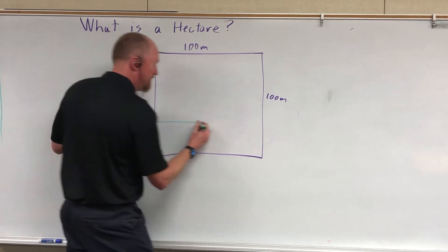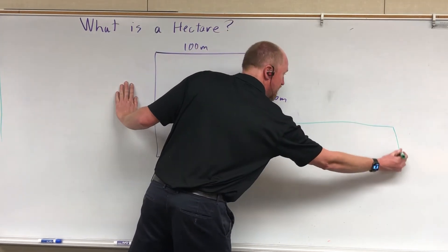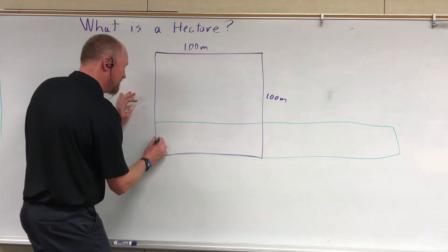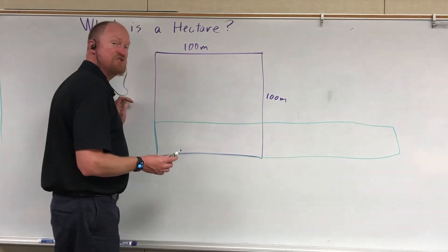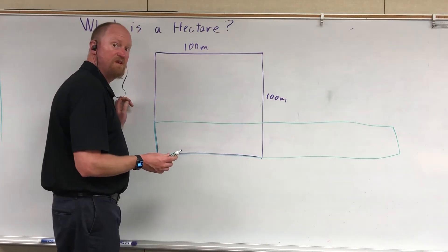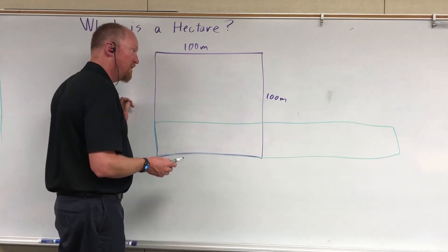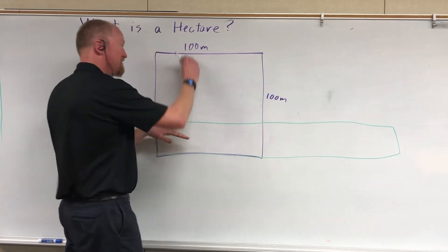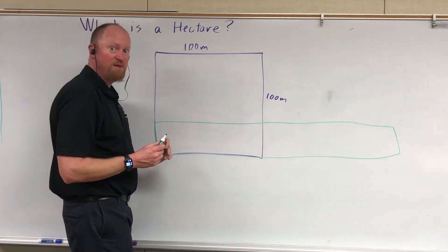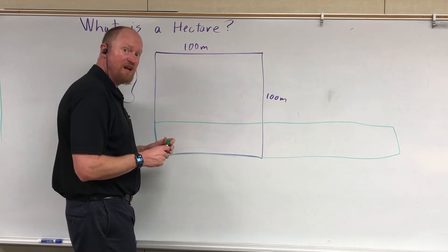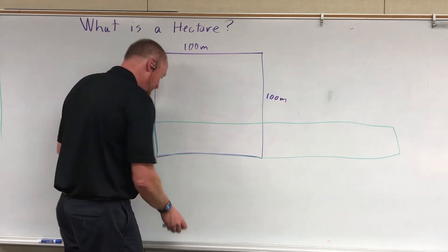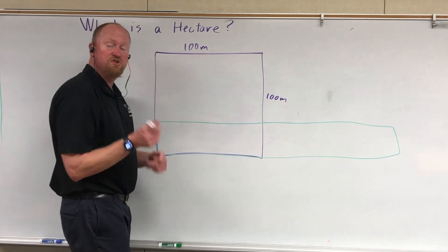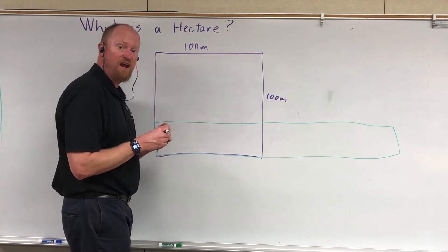So it's about a fifth as wide and about twice as long as the hectare. Twice as long means times two, a fifth as wide means divide by five, and basically what you get is that a hectare is approximately equal to 2.5 acres.